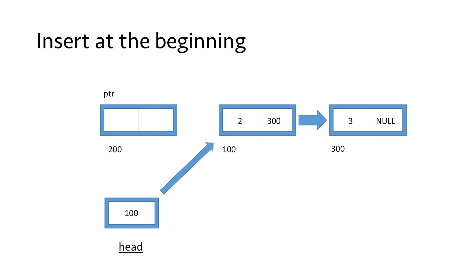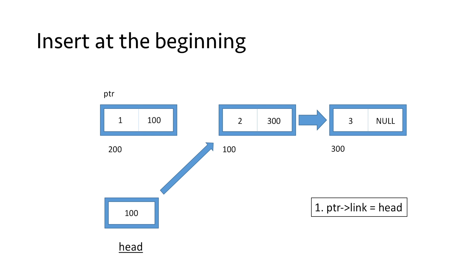We store 1 in the data part of this node. Now we need to point our newly created node to the node containing value 2. We can use the head pointer, as it contains the address of the node containing value 2, which is the start of our linked list. So we use the statement ptr->link = head, copying the value in head to the link part of our newly created node. Thus the link part contains the value 100, which is the address of the node containing value 2, and our newly created node is now pointing to it.